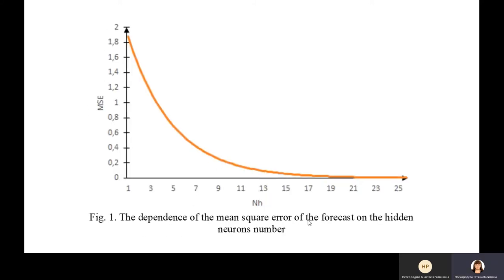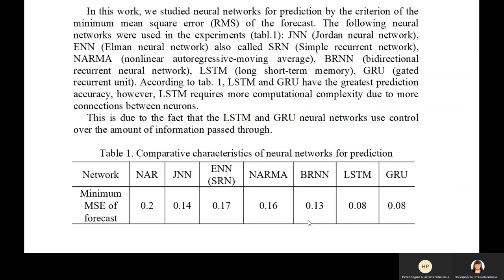The dependence of mean square error of the forecast on the hidden neuron number. The results of the experiment present in Table 1. Comparative characteristics of neural networks for prediction.